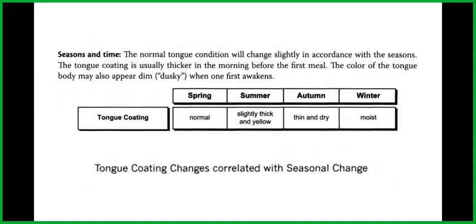Seasons and time: the normal tongue condition will change slightly in accordance with the seasons. The tongue coating is usually thicker in the morning before the first meal, and the color of the tongue body may appear dim or dusky when one first awakens. The tongue coating during spring is normal; in summer, slightly thick and yellow; in autumn, thin and dry; in winter, moist.